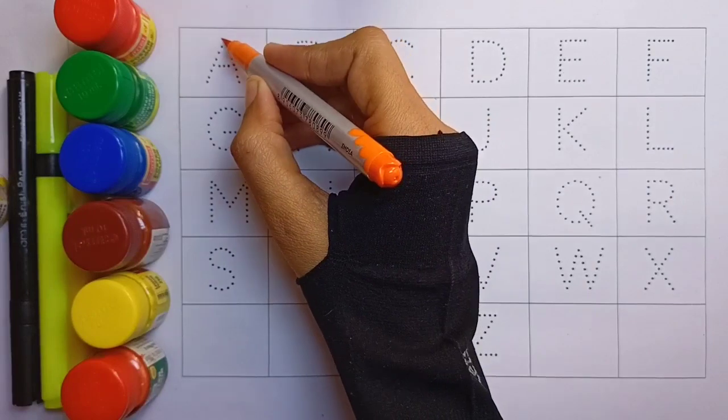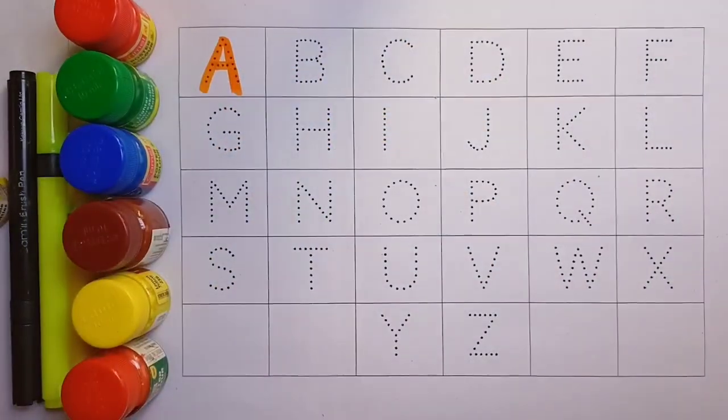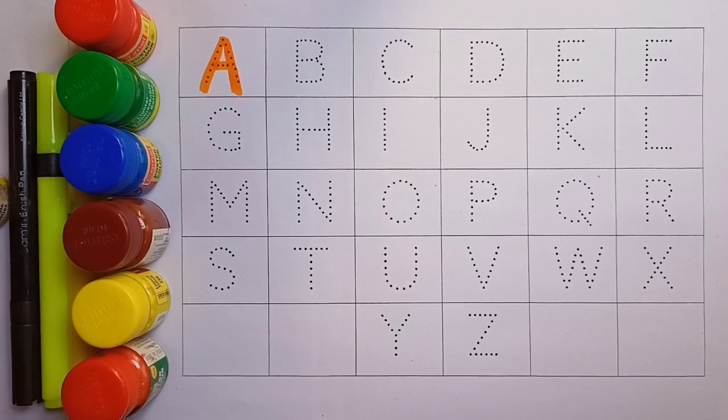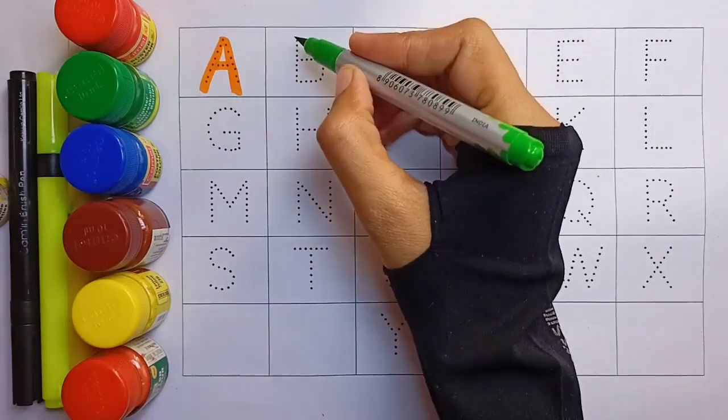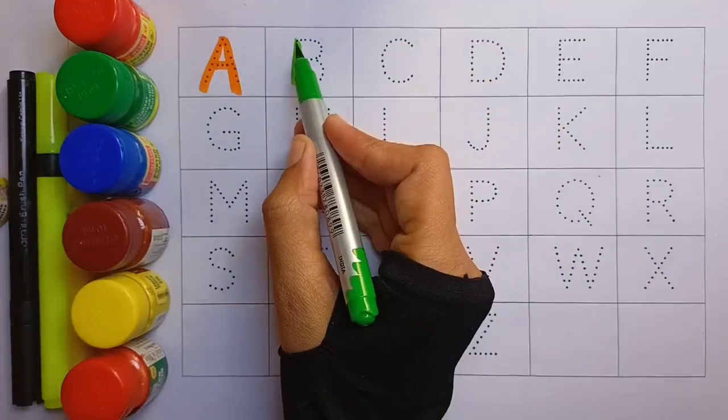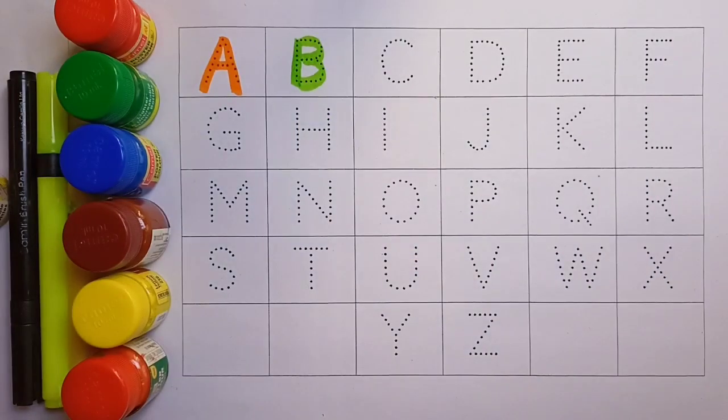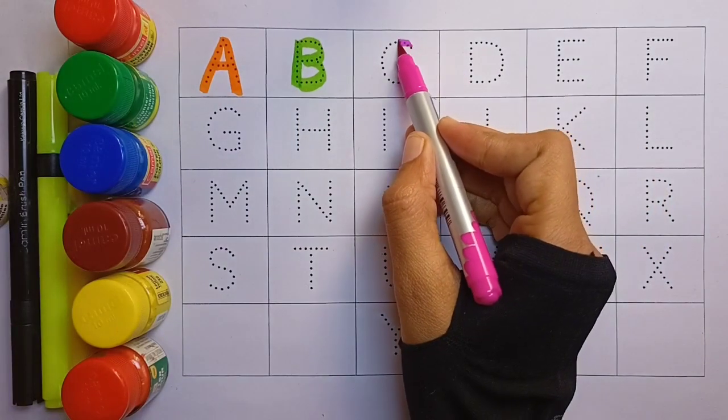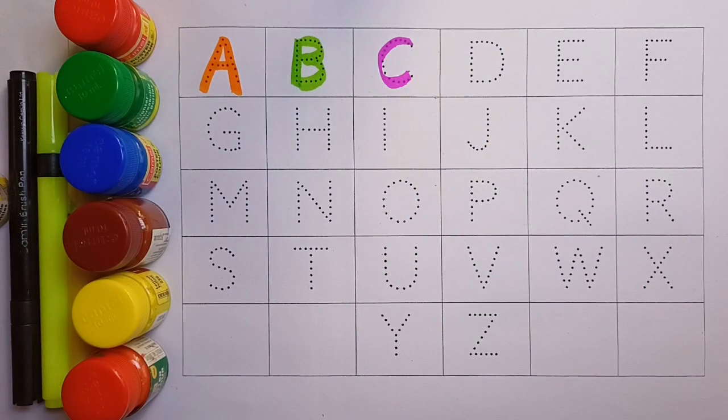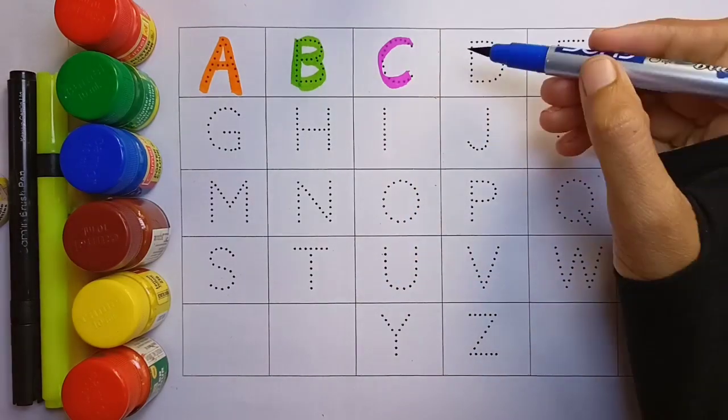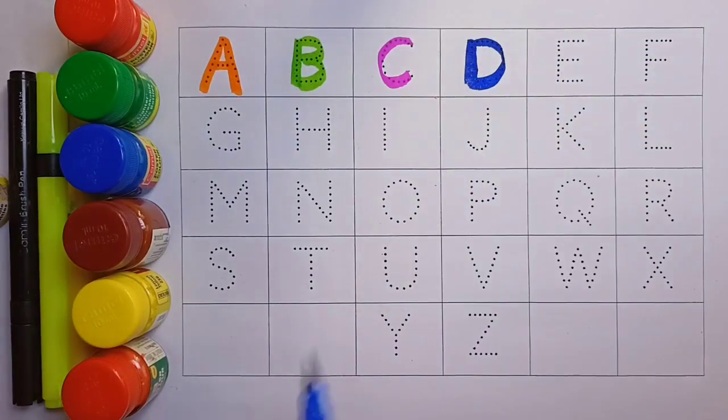A, A for Apple. Green color. B, B for Ball. Green color. C, C for Cat. Pink color. D, D for Dog. Blue color.